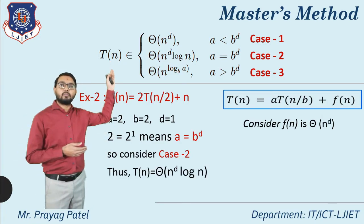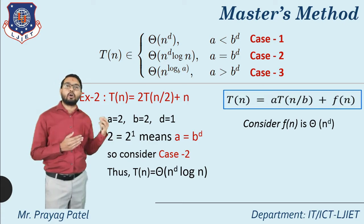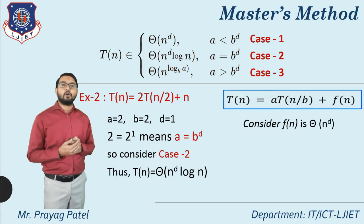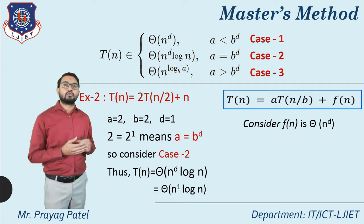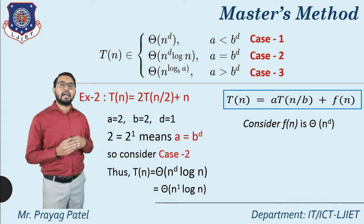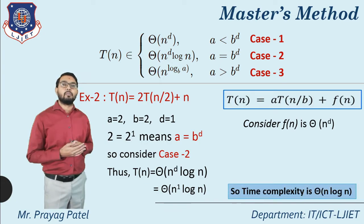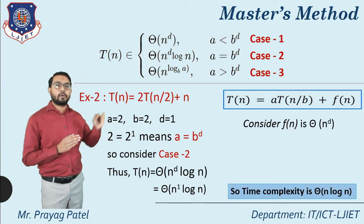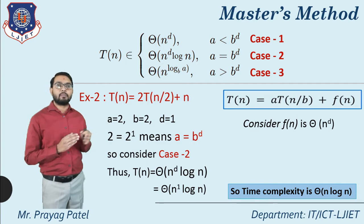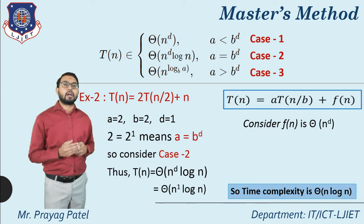According to case 2, T(n) = Θ(n^d log n). Putting d = 1, we get Θ(n^1 log n) = Θ(n log n). So the complexity for example 2 is Θ(n log n).